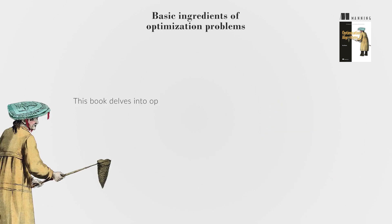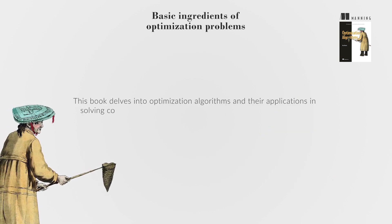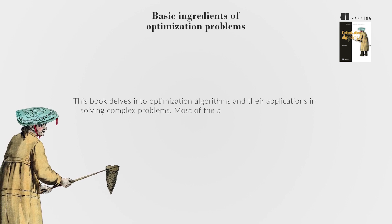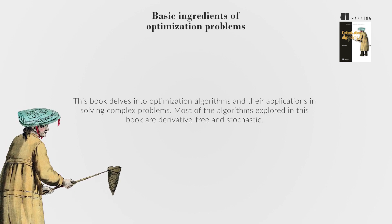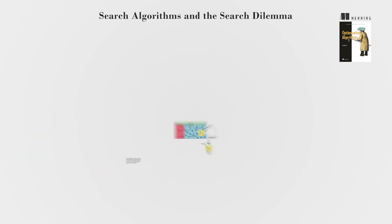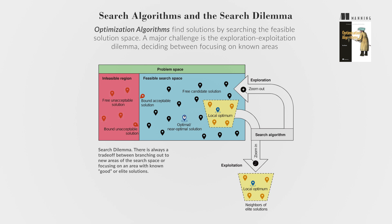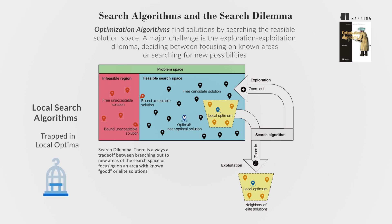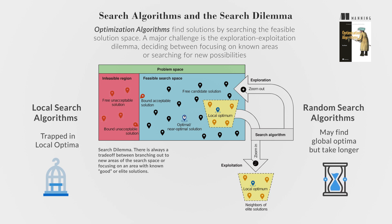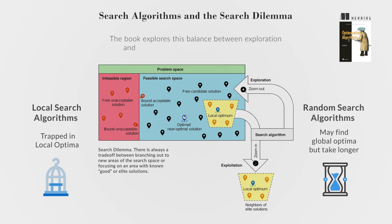This book delves into optimization algorithms and their applications in solving complex problems. Most of the algorithms explored are derivative-free and stochastic. Optimization algorithms find solutions by searching the feasible solution space. A major challenge is the exploration-exploitation dilemma — deciding between focusing on known areas or searching for new possibilities. Local search algorithms risk getting trapped in local optima, while random search algorithms may find global optima but take longer.